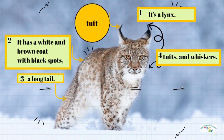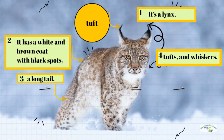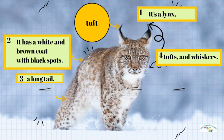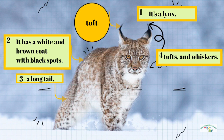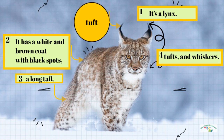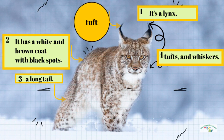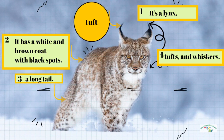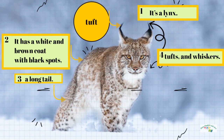It's a lynx. It has a white and brown coat with black spots, a long tail, tufts and whiskers.